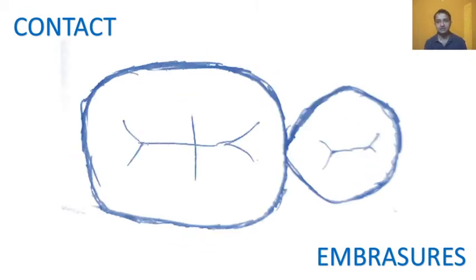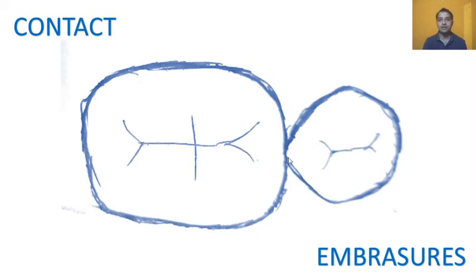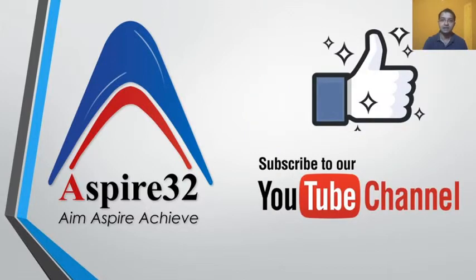In mandibular teeth the contact is generally situated in the center — the embrasures on both sides are equal. In maxillary teeth, however, the lingual or palatal embrasure is wide and the buccal embrasure is small, indicating that the contact is situated more buccally. If you have questions during the video, please post them in the comment section. Also, a gentle reminder to subscribe to the channel so you don't miss any new videos.